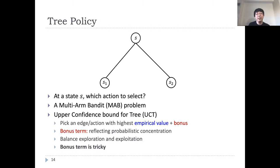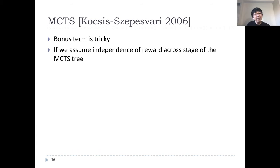This all works fine with just one depth. However, within the tree, the bonus term becomes pretty tricky. Should we use a bonus term that is logarithmic in T, the total number of simulations so far, or a polynomial bonus term? Well, if we assume independence of reward across stage of MCTS tree, then basically, the classical results suggest a bonus term that scales as square root log T over M. In particular, the dependence on T is logarithmic. This is implied by exponential concentration inequalities.